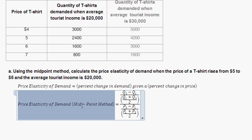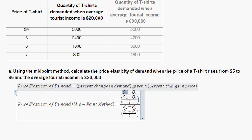Given our price elasticity of demand midpoint method calculation, the first part is the percent change in demand — how quantity demanded changes from period one to period two — and then the denominator is the percent change in price, going from price one to price two.